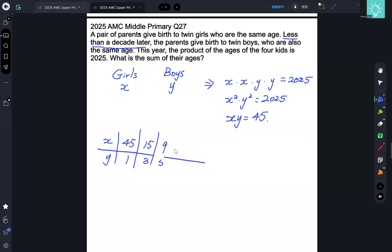9 and 5 would work because that is less than 10. 5 and 9 also works, and then 3 and 15 and 1 and 45. These two are the only ones that work, but we realize that the girls are older, so x needs to be bigger. So in fact, this one doesn't work.